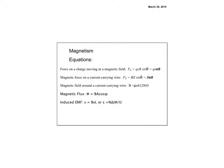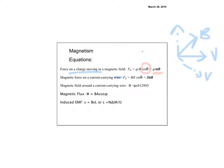Magnetism: the force from a B-field on a charge is F = qvB sinθ — a cross product. In practice, you want the component of B perpendicular to velocity. The force F, velocity v, and B-field are all mutually perpendicular. For a wire, the force is F = BIL sinθ. The magnetic field around a wire is B = μ₀I / (2πr), where r is the distance from the wire.